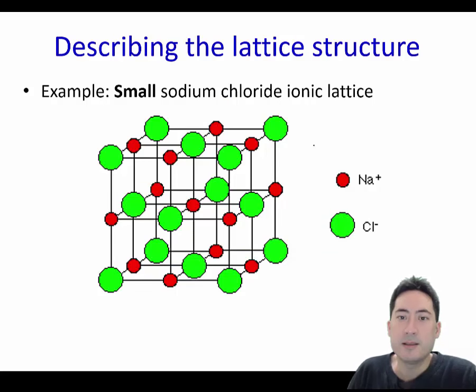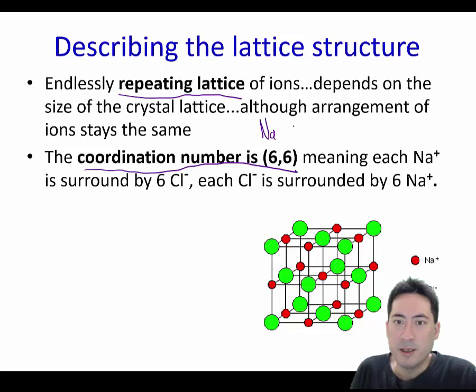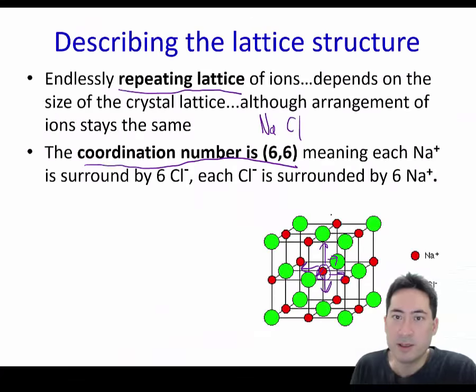Going on to describe the lattice now, notice that the sodium ion is smaller because it's lost a shell really, and the chlorine's now got a full shell. And when you describe it, use the word repeating lattice. Coordination number, also you can use that to describe it as well. So every sodium is surrounded here by 1, 2, 3, 4, 5, 6 chlorine ions. And the same with the chlorine ions, they're surrounded by 6 sodium ions. So that's why we write the (6,6) there.